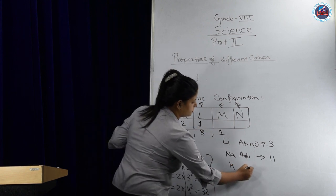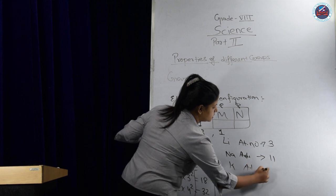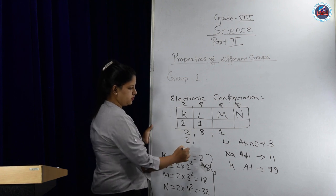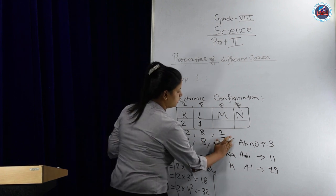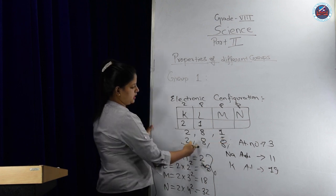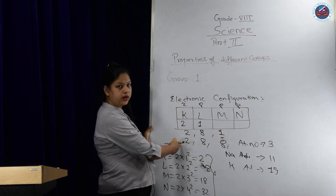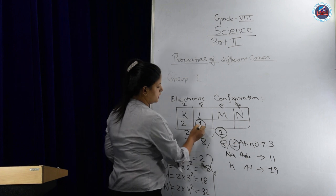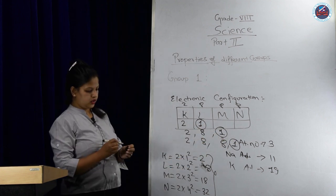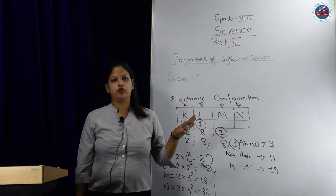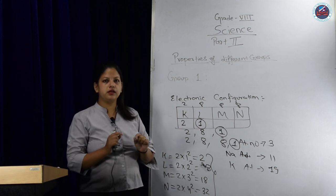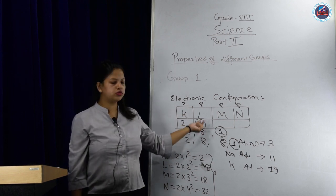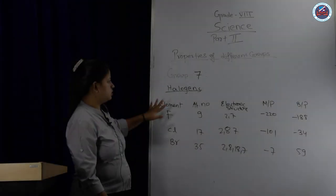For sodium, atomic number is 11. K can keep 2 electrons, L can keep 8 only. So 8 plus 2 equals 10, and 1 extra will go to the third shell. For potassium, atomic number is 19. K has 2, L has 8, M has 8, which gives 18, and 1 more extra goes to N. Each one has 1 extra electron in the last shell.